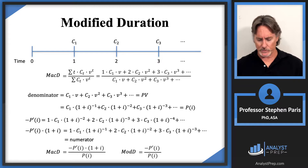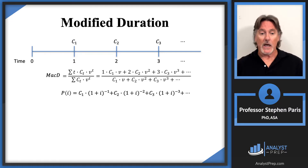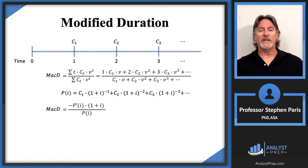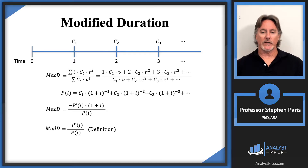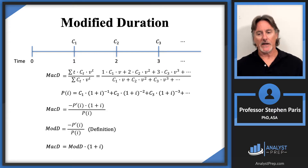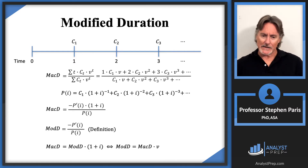Let's clean up and summarize. The Macaulay duration is defined as before. We define P(i) as the present value or price function. Then MacD equals minus P'(i) times (1+i) over P(i). The modified duration is defined as the negative of P'(i) divided by P(i). This gives the relationship: MacD = ModD × (1+i), or equivalently, ModD = MacD × v.